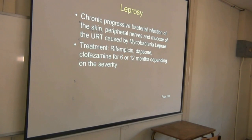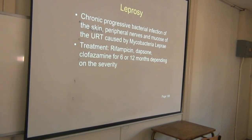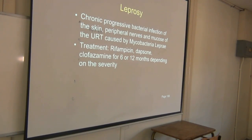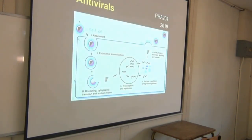Leprosy is also a type of mycobacterial infection affecting the skin, peripheral nerves, and mucosa of the upper respiratory tract. Depending on severity, it may be treated with rifampicin and dapsone, or anti-leprosy treatment for either 6 or 12 months.